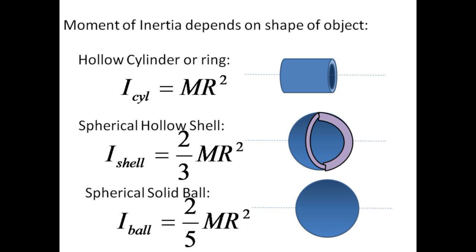The hollow cylinder has the largest moment of inertia given by m r squared. The hollow shell has moment of inertia two-thirds m r squared, and the solid ball two-fifths m r squared.